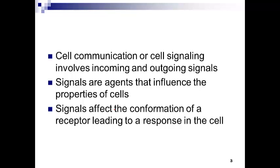Cells have the ability to communicate with the environment and also with one another, so you have incoming signals and outgoing signals. Signals is a general term representing agents that influence the physiology, properties, and structure of a cell. Signals are going to bind to what's called receptors, which starts a cascade of events that ultimately influences those cell properties.